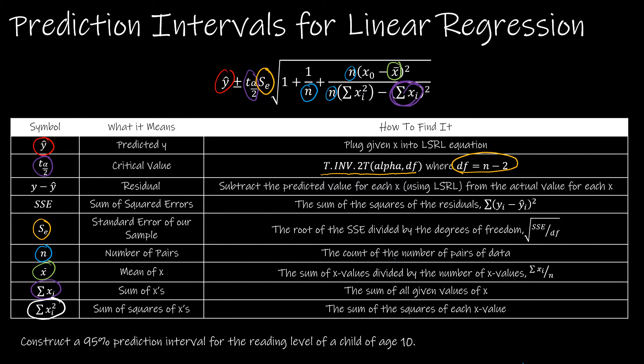We are going to look at the example we've already built knowledge on — the reading level of a child. We've already found the least squared regression line equation and already plugged in 10 to find the predicted value. So we're going to pick it up from there; we should already have Y-hat, and we'll continue from there.